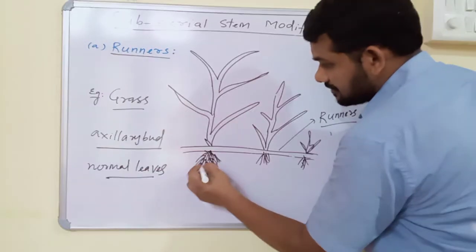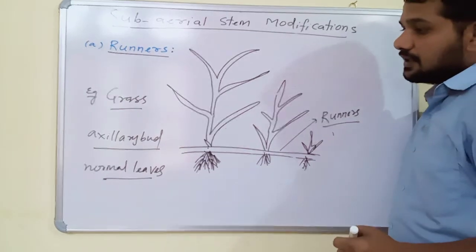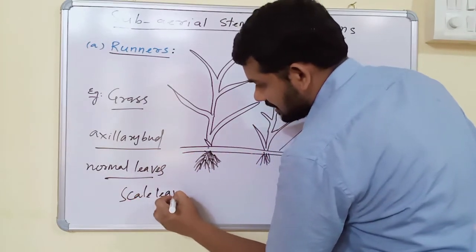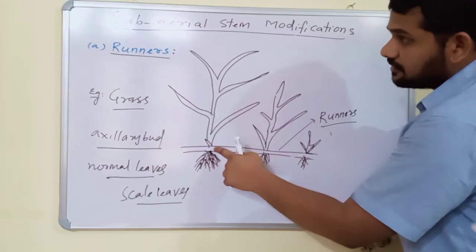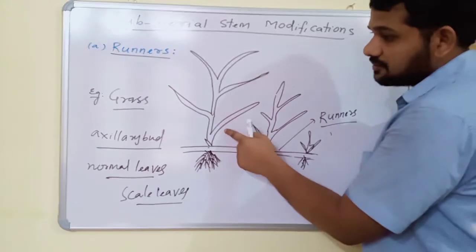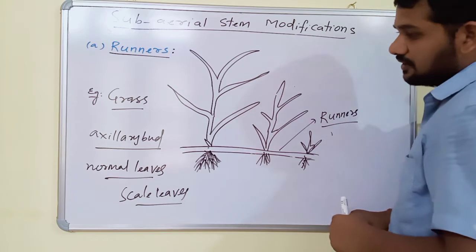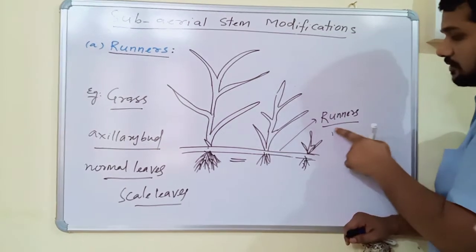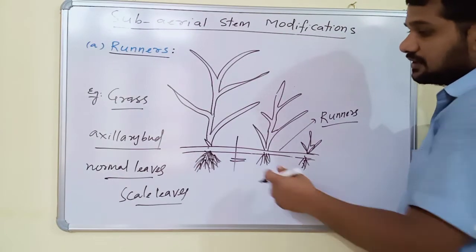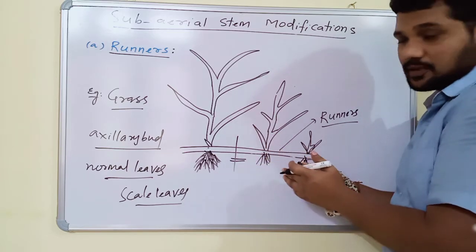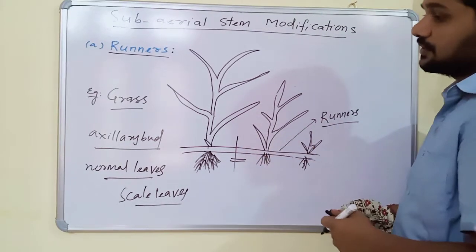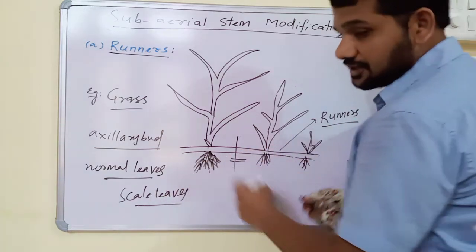Runners usually contain adventitious roots at their nodes and also some scale leaves — leaves modified into scale-like structures. In plants like grasses, the nodes contain adventitious roots and scale leaves, but normal leaves are absent. These horizontal weak stems are called runners. Runners may break off and take part in vegetative propagation. Due to runners, plants can spread in different directions, and they are devices for plants to multiply quickly.